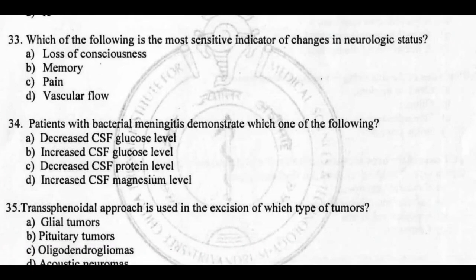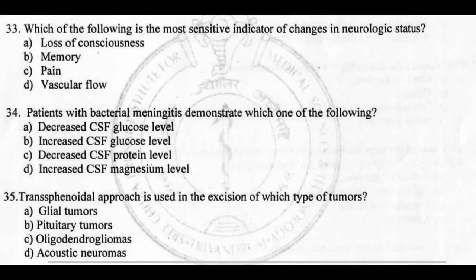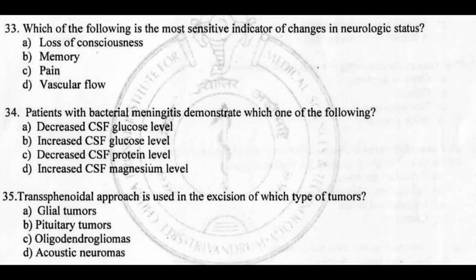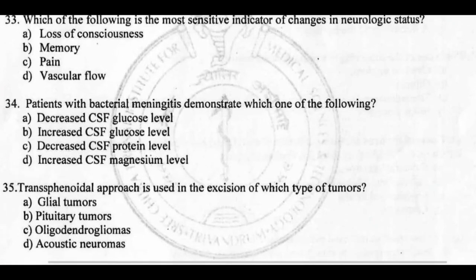Question 33: Which of the following is the most sensitive indicator of changes in neurological status? Options: loss of consciousness, LOC, memory, pain, and vascular flow. Question 33 right answer A: loss of consciousness — LOC is the most sensitive indicator of neurological status.